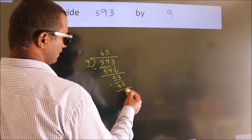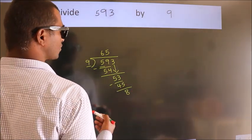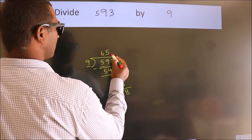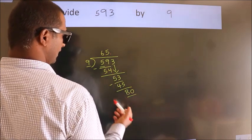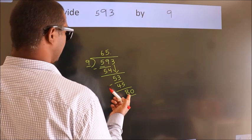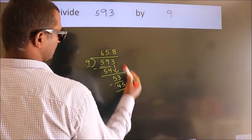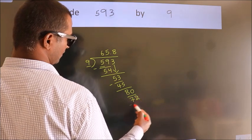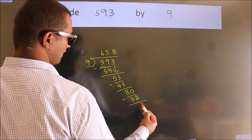After this, no more numbers to bring down. So what we do is we put a dot and take 0. So 80. A number close to 80 in the 9 table is 9 times 8 equals 72. Now we subtract. We get 8.